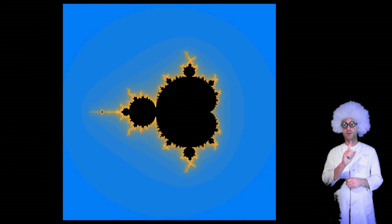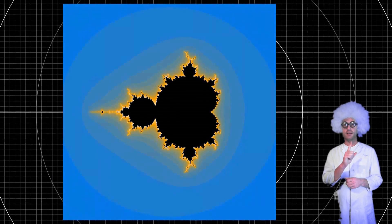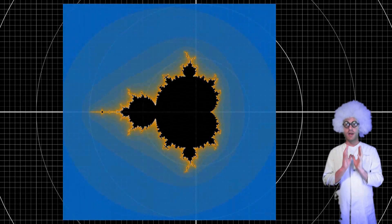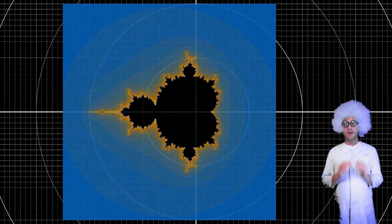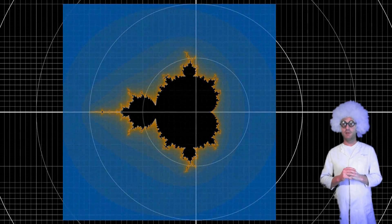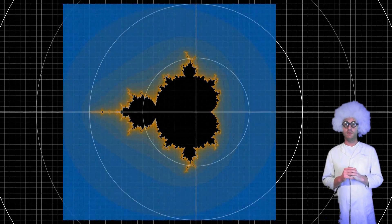The Mandelbrot set consists of all Julia seeds in the complex number plane that produce a connected Julia set. Whether a Julia set is connected or not is determined by checking the zero value of the Julia set.